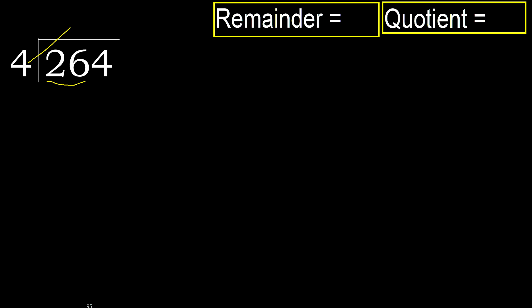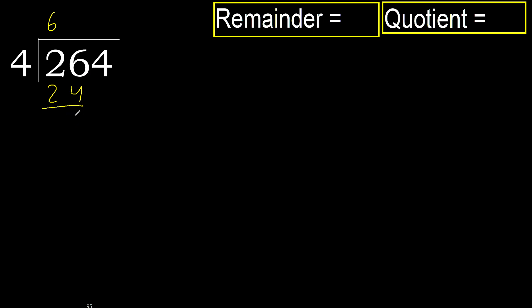4 multiplied by 7 is 28 — 28 is greater. 4 multiplied by 6 is 24 — 24 is not greater. 26 minus 24 is 2, next.